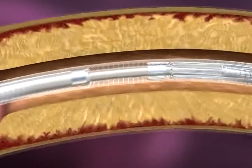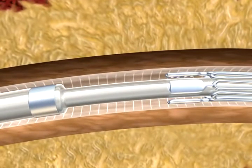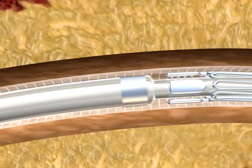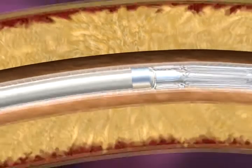Advance the inner body of the delivery system until the proximal marker band bumper is just proximal to the stent. This prepares the stent for deployment.